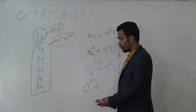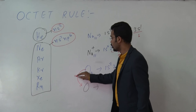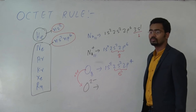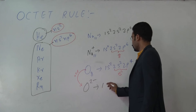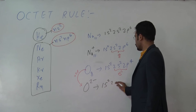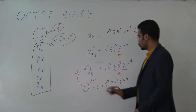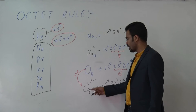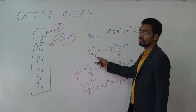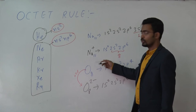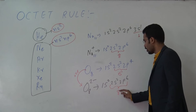How does O²⁻ form? From oxygen to O²⁻, there is an addition of two electrons. The configuration becomes 1s², 2s², 2p⁶. The total number of electrons is not eight but eight plus two equals ten. Similarly, Na⁺ also has ten electrons. Now the valence electrons of O²⁻ are eight.